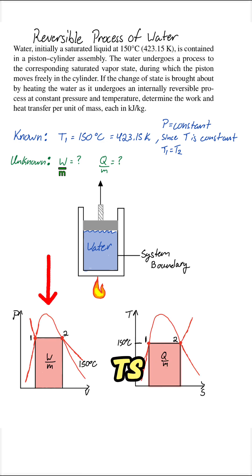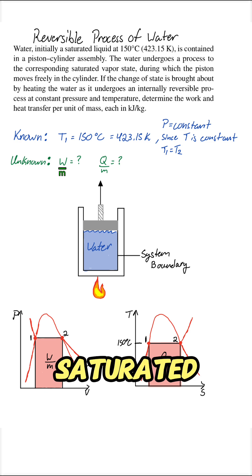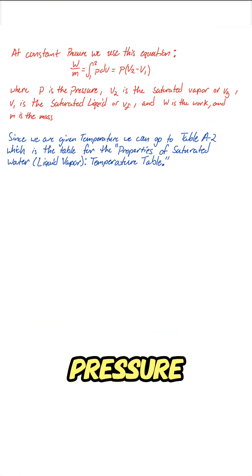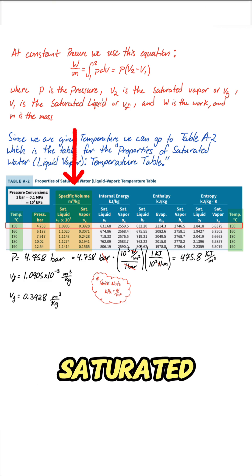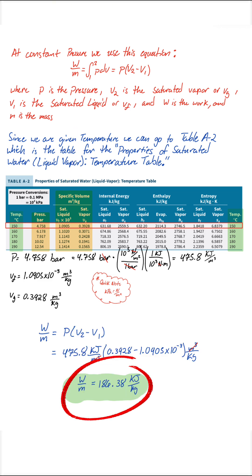In the PV and TS diagrams, you can see we're moving from saturated liquid to saturated vapor. The equation for work at constant pressure is W over M equals P times the change in specific volume. Using table A2, we pull the pressure, the specific volume of saturated liquid and of saturated vapor. Plugging in, we get about 186 kilojoules per kilogram of work.